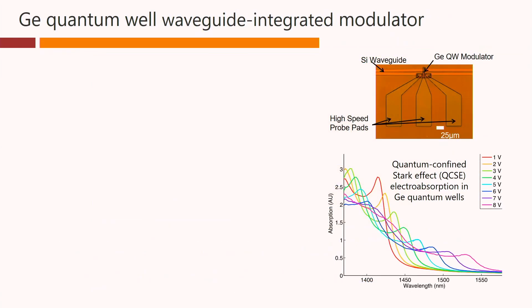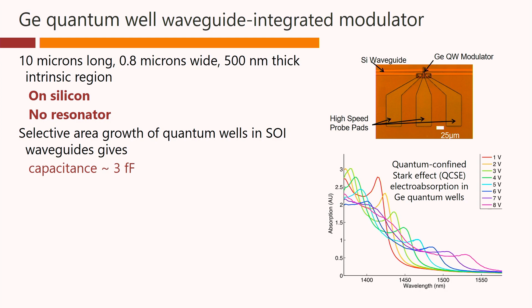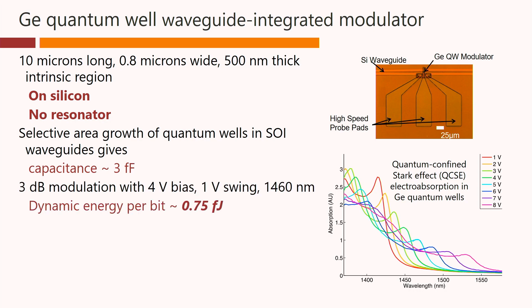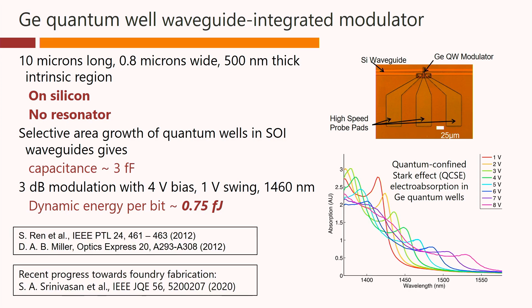This figure shows an example of quantum-confined Stark effect electroabsorption in germanium quantum wells — showing electroabsorption spectra as a function of wavelength for various voltages. The device is of the order of 10 microns long, built on silicon, and requires no resonator, so there's nothing to tune. Growth of this structure in silicon-on-insulator waveguides gives capacitances of a few femtofarads, and the dynamic energy per bit is of the order of 0.75 femtojoules. There has been recent progress towards foundry fabrication of this kind of device.